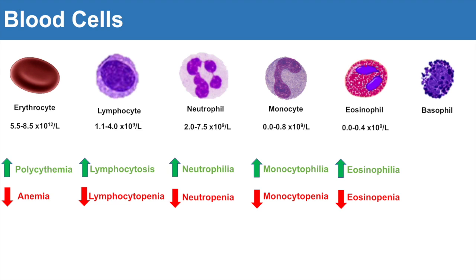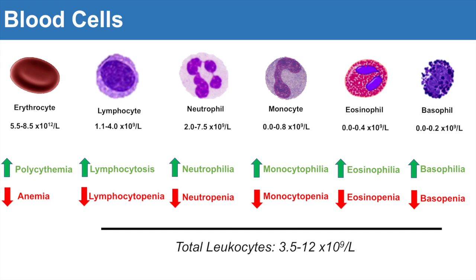The last white blood cell I'll talk about is basophils, one of the lowest in number in the blood. They range from 0 to 0.2 times 10 to the 9th per liter. Anything higher would be basophilia or basocytophilia, and anything lower would be basophenia or basocytopenia. Looking at all white blood cells together, the typical range is 3.5 to 12 times 10 to the 9th per liter. Just note that erythrocytes are counted in 10 to the 12th power, while all white blood cells are counted in 10 to the 9th power.